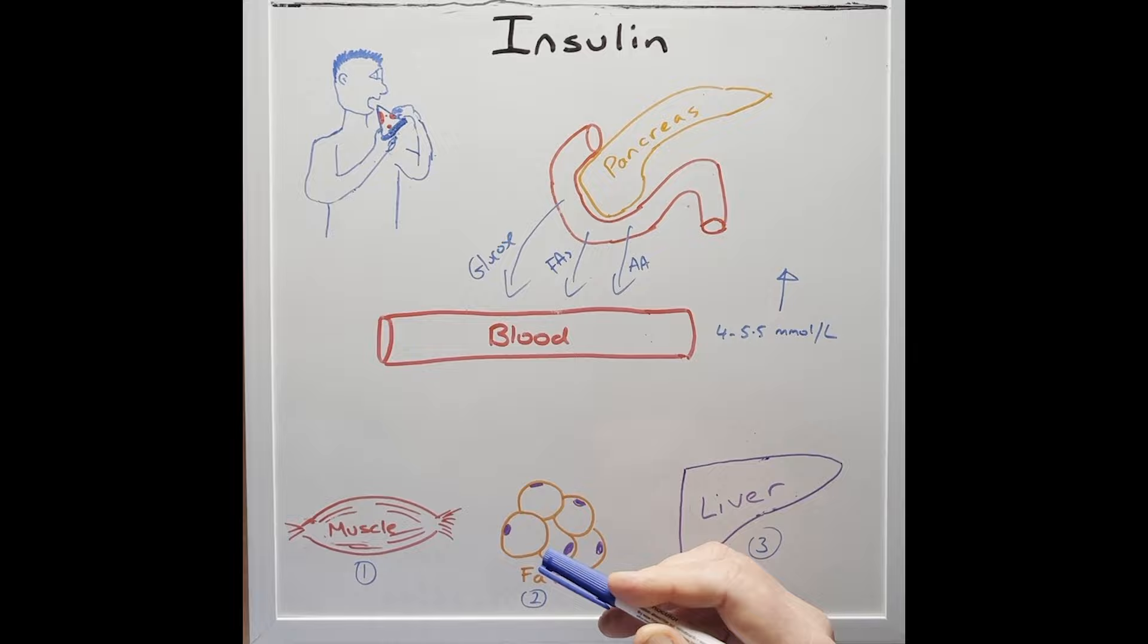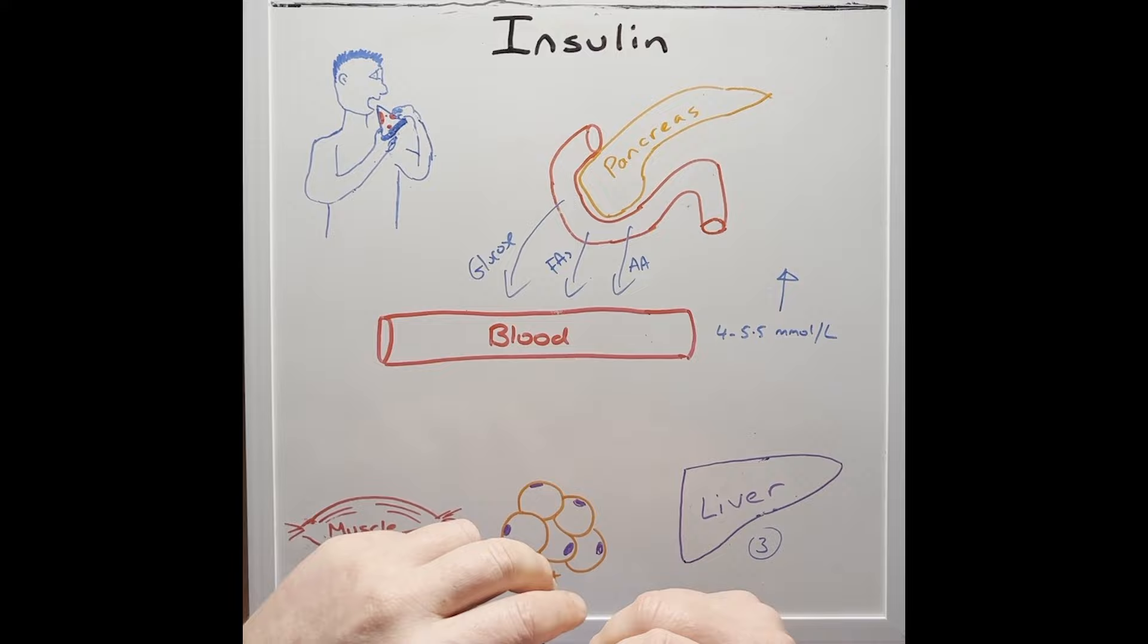Unfortunately, the cells in the muscles, fats and liver, their glucose doors are now closed. So the glucose can't enter these cells.